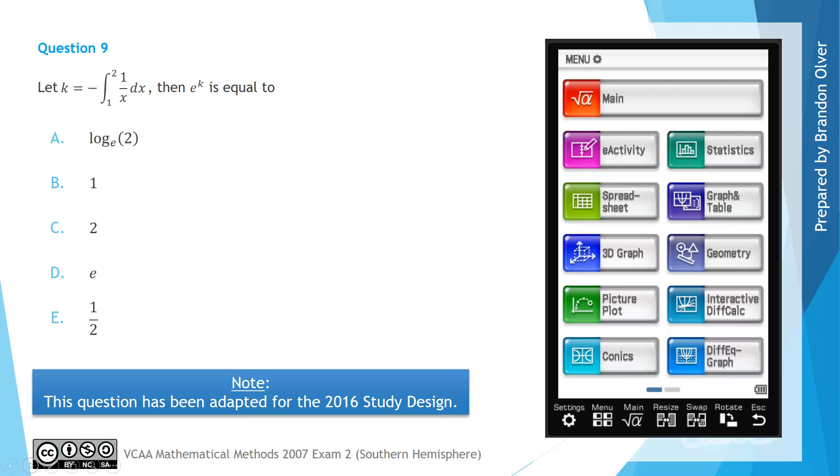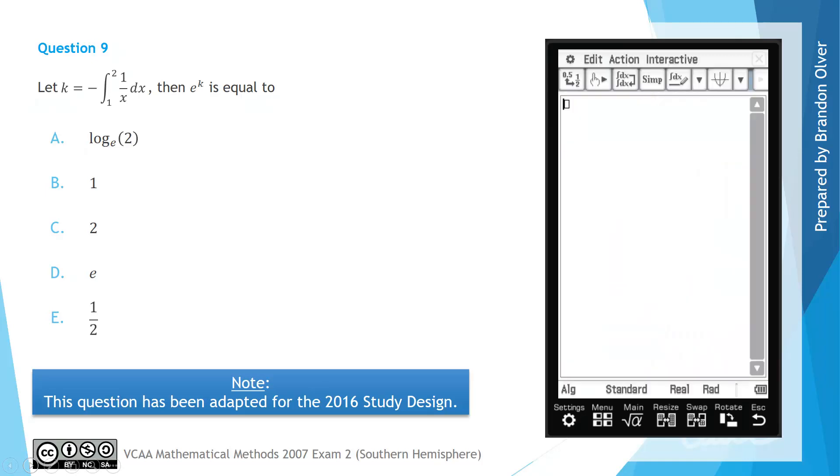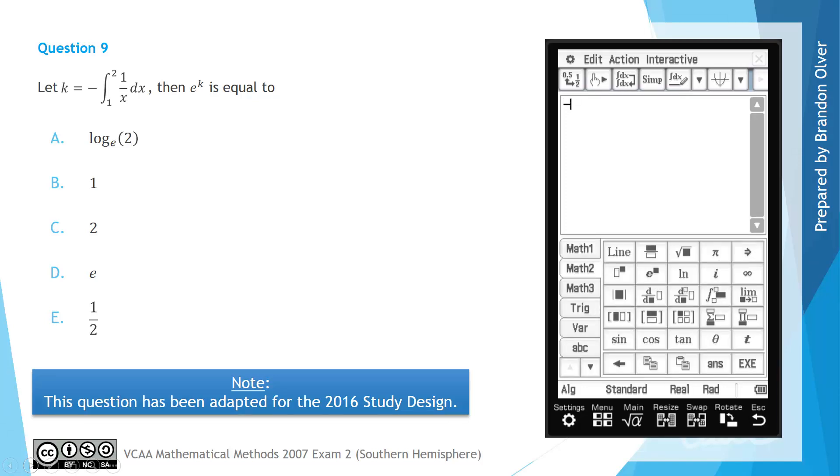On the CAS calculator, go into the main menu. Next what we want to do is type in the integral, so we want negative, and then using keyboard and math 2 we can find the integral symbol. And we want to go from a lower terminal of 1 to an upper terminal of 2 for the function which is 1 divided by x, and that is with respect to x. So hitting execute.